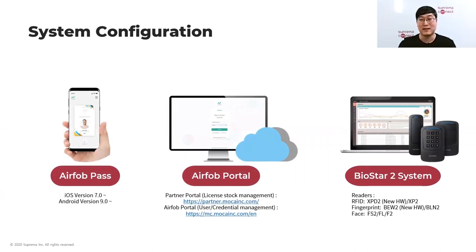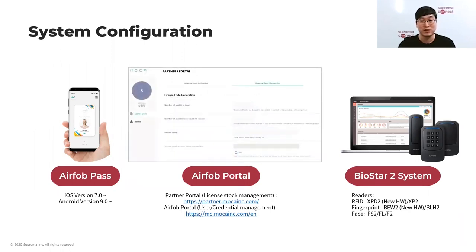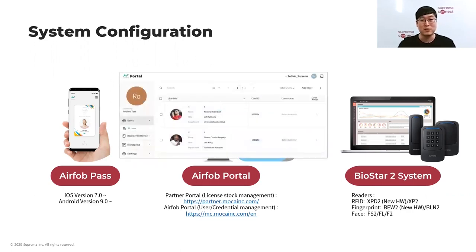AirFob Pass is the mobile application used as a key, ID card, or access control credential. It is available on both iOS and Android smartphones. AirFob Portal is the cloud portal site where you can issue the AirFob Pass application via email or SMS, and manage the license card credit stock. There are two types of portal sites: the Partner Portal for license stock management and generating license codes, and the AirFob Portal which end users use to manage users or cards.